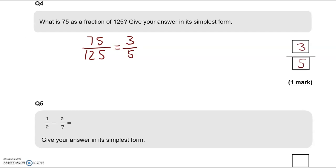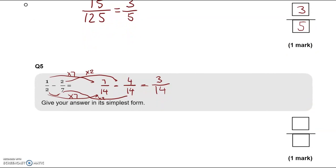Question number 5: a half take away 2 sevenths. Give your answer in simplest form. We're going to convert them to 2 fractions with a common denominator. So 2 and 7, the common denominator is 14. To get from 2 to 14 we multiply by 7, so we must do the same with the top number. 1 times 7 is 7. 2 times 2 is 4. So 7 take away 4 is 3. So 3 over 14, and we can't simplify it any further.